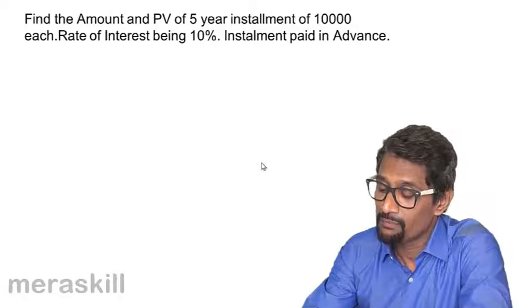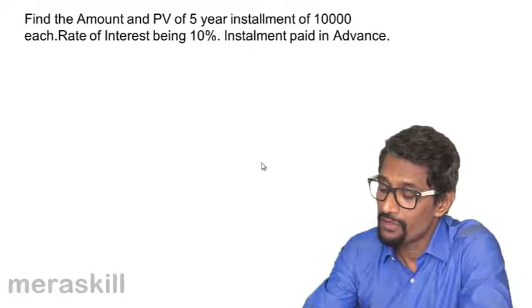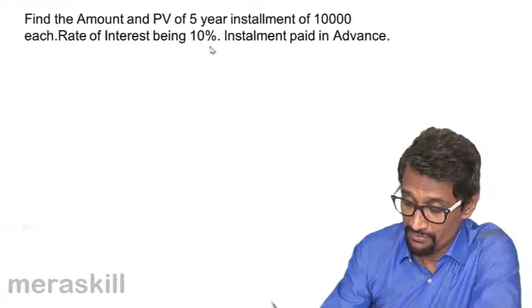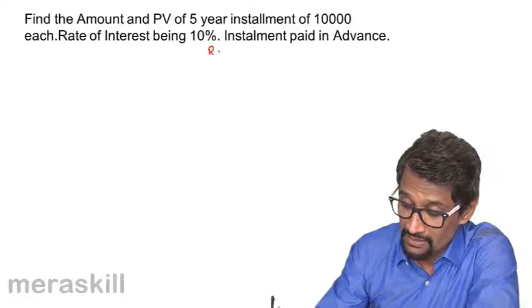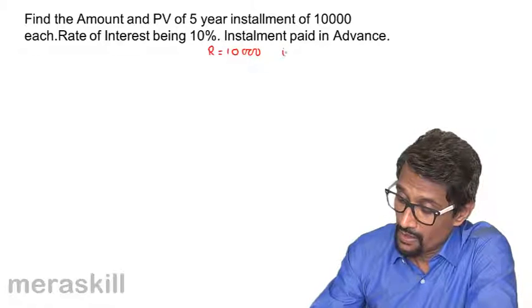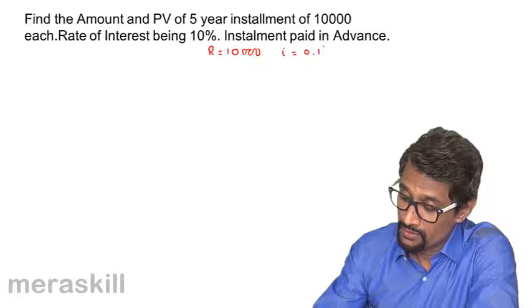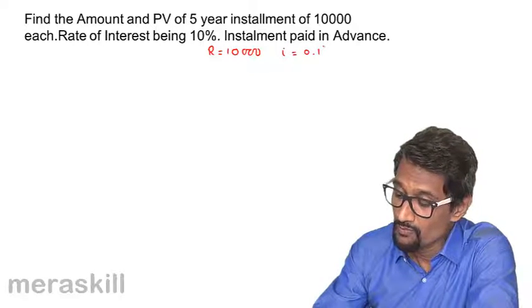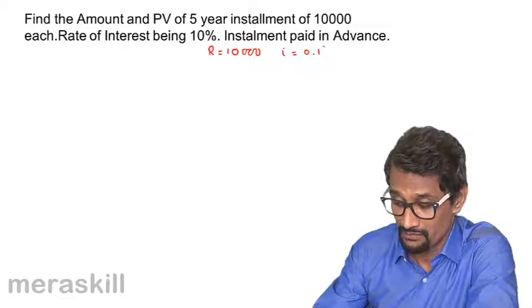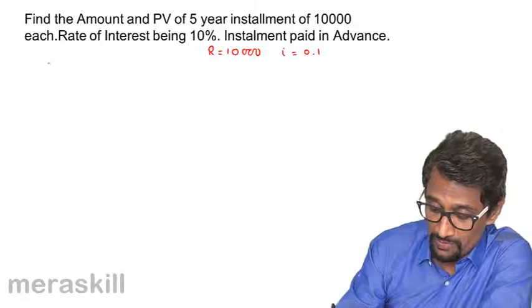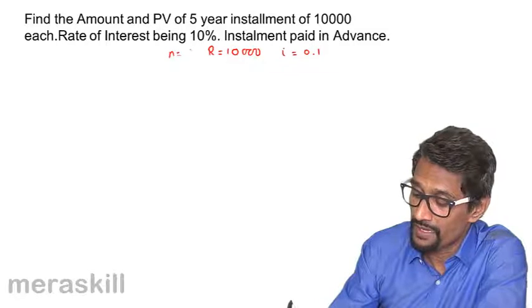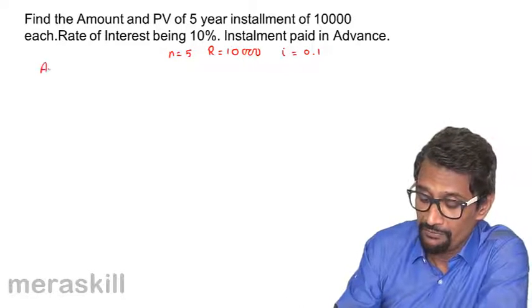Find the amount and present value of a 5-year installment of 10,000. R is 10,000, i is 0.1, and the installment is paid in advance. n is equal to 5, so you want to find a5.